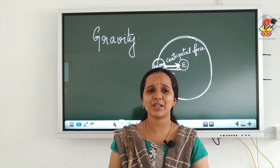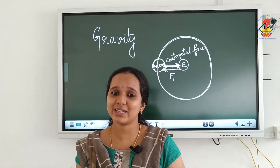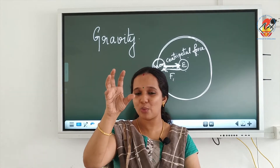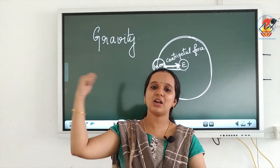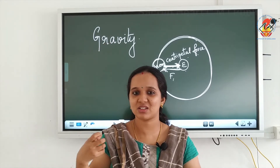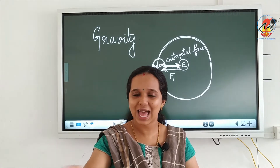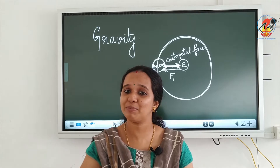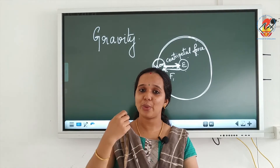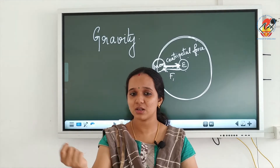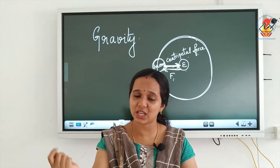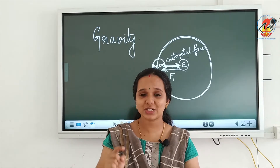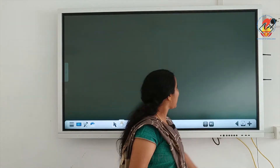For better understanding of centripetal force, let us observe a game of hammer throw, which is an Olympic athletic event. In hammer throw, there is a weight attached to a string — called the hammer. The thrower swings the hammer around and releases it at a particular point such that the hammer flies off in one particular direction. When the swinger gradually swings it, the hammer gains velocity and when released, the hammer flies off in a straight line which is a tangent to the circular path of revolution.